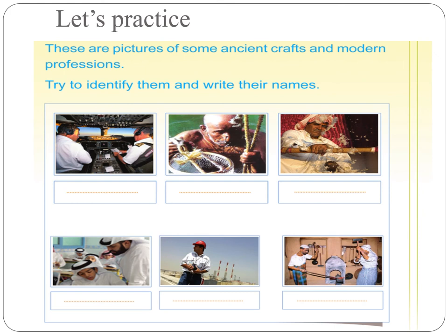These are pictures of some ancient crafts and modern professions — try to identify them and write their names. What do you see in the first picture? It is aviation — there are two pilots who are trying to fly an airplane. In the second picture there is an old man in water with a little basket — he has gone for pearl diving. The third image shows Al-Sadhu weaving.